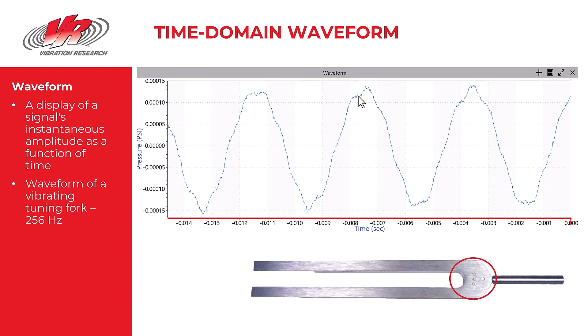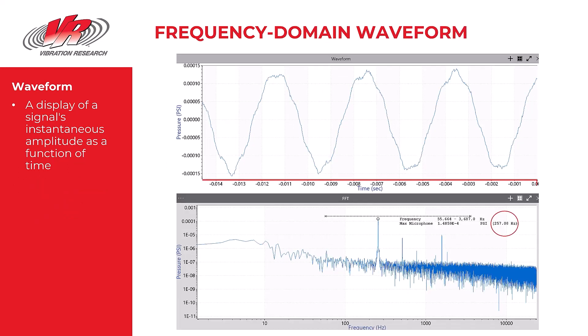When the time domain waveform is transformed into the frequency domain, you can see that there is primarily frequency content at 257 hertz and some content at overtones above 257 hertz. This peak here is our main frequency — 257, 256 — which is the tuning fork's value.